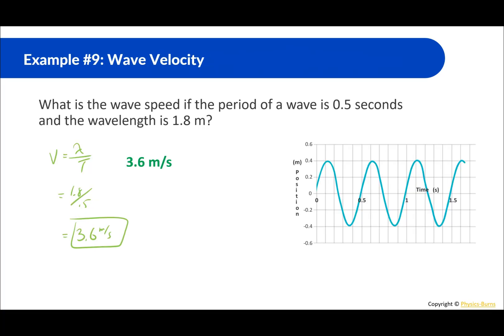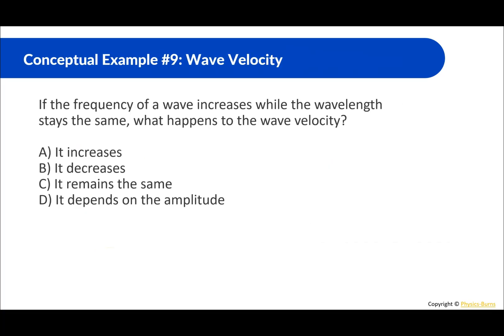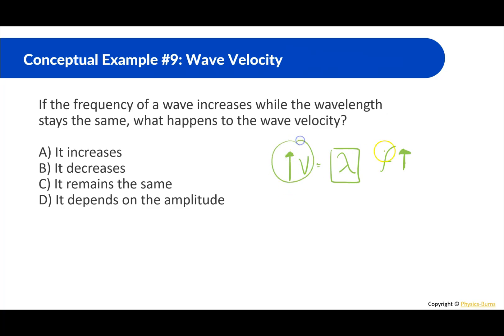Conceptual question: if the frequency of a wave increases while the wavelength stays the same, what happens to the velocity? Velocity equals wavelength times frequency. If frequency goes up and wavelength stays the same, then wave velocity also goes up — it increases.